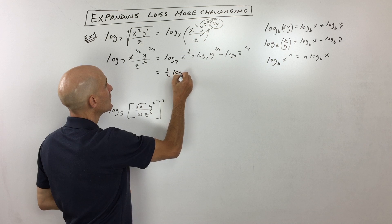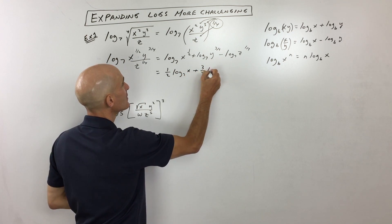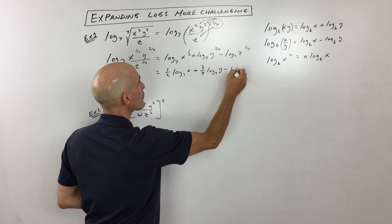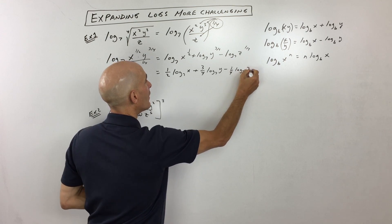So we get one-half log base seven of x plus three-fourths log base seven of y minus one-fourth log base seven of z.